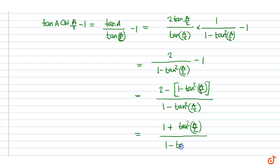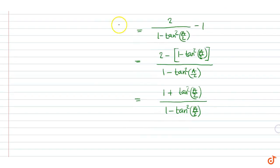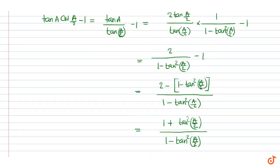Divided by 1 minus tan²(A/2), this is equal to 1 plus tan²(A/2) divided by 1 minus tan²(A/2). This expression is equivalent to the previous expression. We have already proved that 1 plus tan²(A/2) upon 1 minus tan²(A/2) equals sec A. This is our proof.